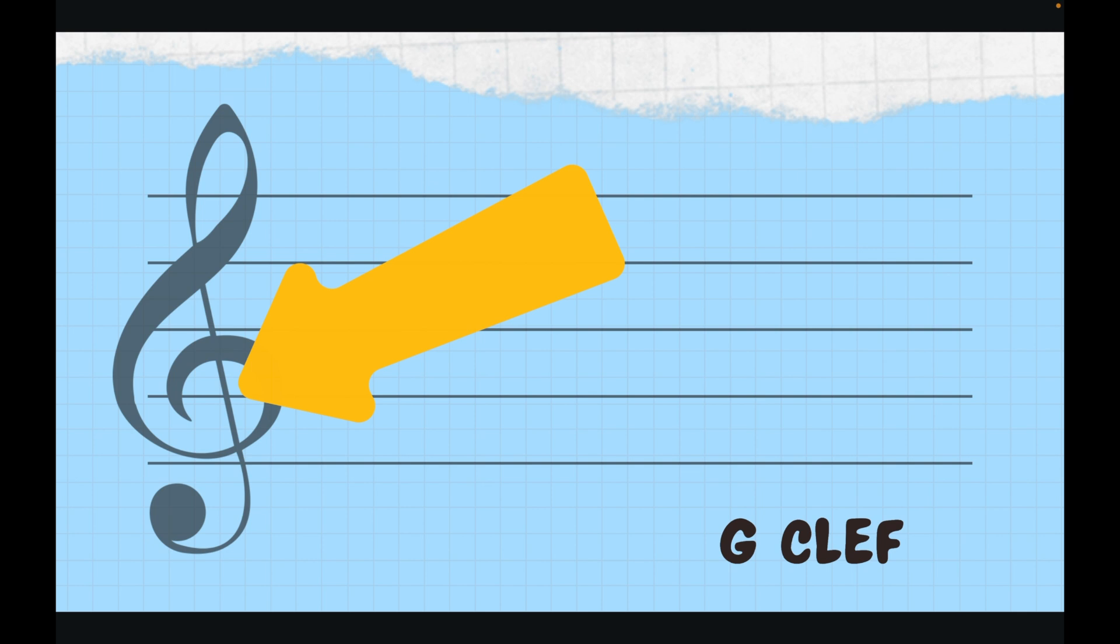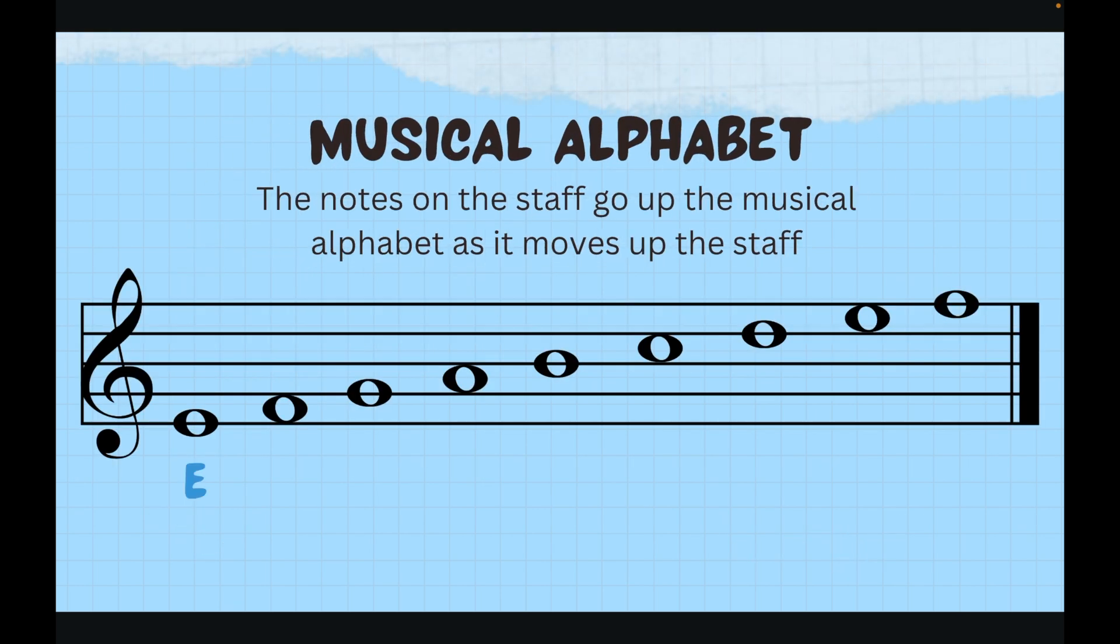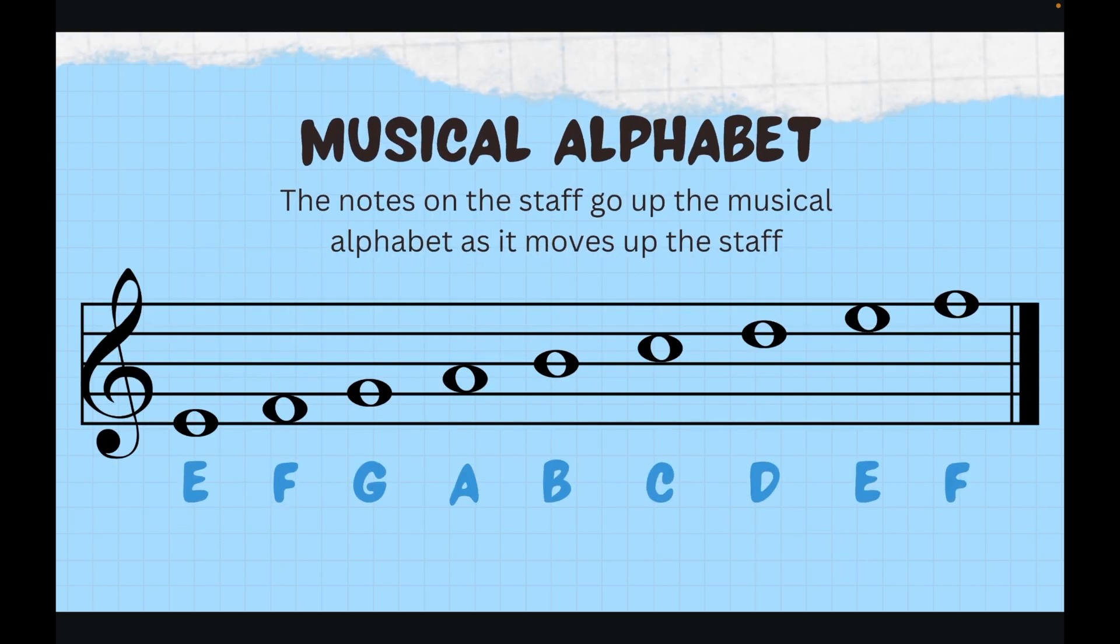Now that we have a little bit of fun facts, we're going to take a look at something that's also very cool. In music we only use our alphabet letters going up to the letter G. So we go A, B, C, D, E, F, G and then go back to A again. If we take our lines and our spaces that we just learned and we put them together, we have the alphabet. The notes on the staff go up the musical alphabet as it moves up the staff.